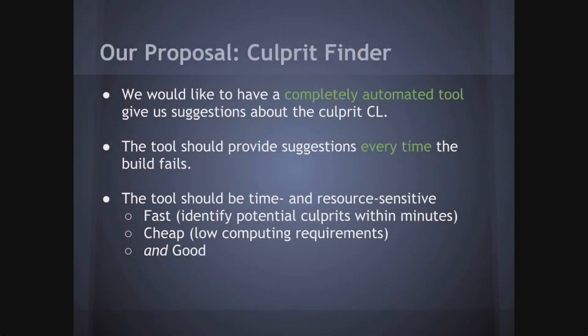Our proposal was to have a completely automated tool that gives suggestions about the culprit and does this every single time the build fails. It provides the user information about what it found and what the suspects could be. The important requirements are: it should be fast — potentially giving a result within minutes — it should be cheap, not using too many computing resources, and it should produce good results, which I'll show at the end.